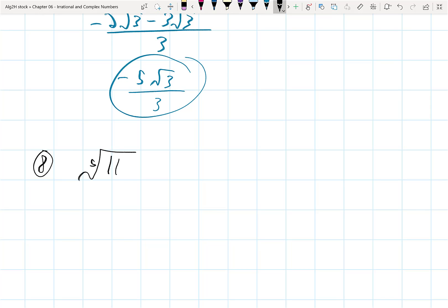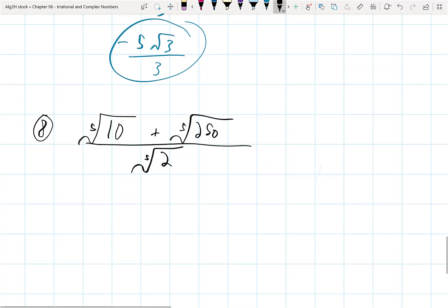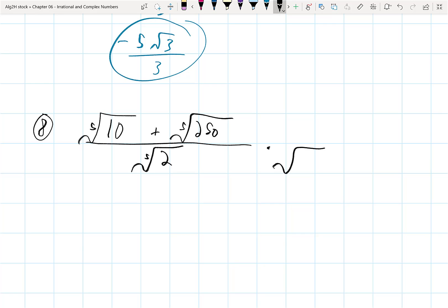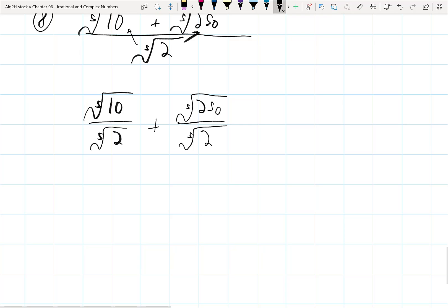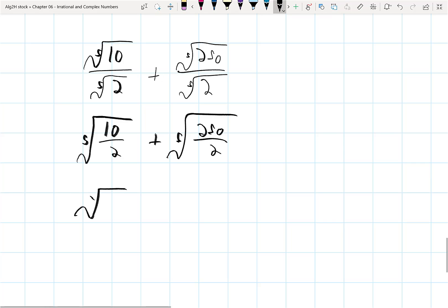Let's say that I have the 5th root of 10 plus the 5th root of 250, and I divide it by the 5th root of 2. If I break up this fraction and I get the 5th root of 10 over the 5th root of 2 plus the 5th root of 250 over the 5th root of 2, then I know that really when I divide with the same index radicals, that's the same thing as the 5th root of 10 halves plus the 5th root of 250 over 2, which is the 5th root of 5 plus the 5th root of 125, and 125 is really equal to 5 to the 3rd power. So there's no perfect 5th in there, and this would be done.